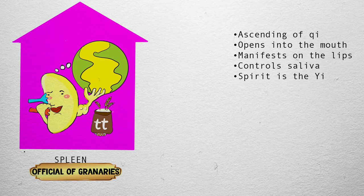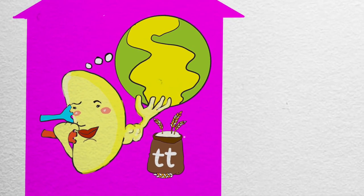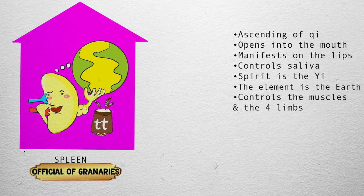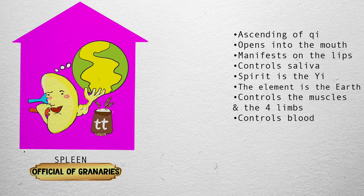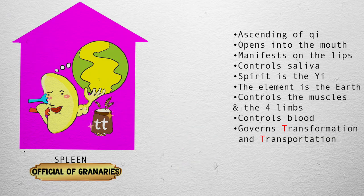The element of the spleen is the earth. Take a look at Miss Spleen's left arm — it's a limb, and it's very muscular, because the spleen controls the muscles and the four limbs. Notice how there are veins and arteries running into Miss Spleen — that's because the spleen controls the blood and, more specifically, holds blood in the vessels. The spleen also governs transformation and transportation, often abbreviated as TNT, as represented by the bag of grains, which also reminds us that the spleen is the official of the granaries.